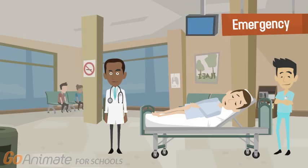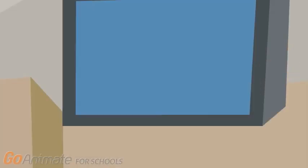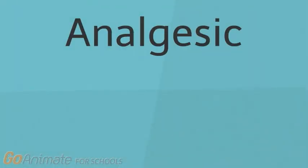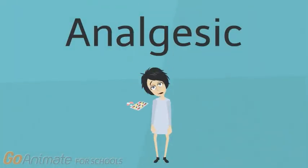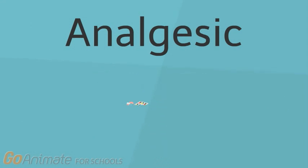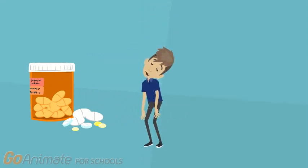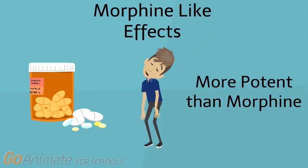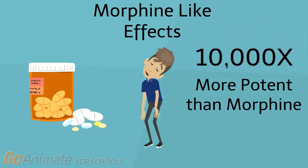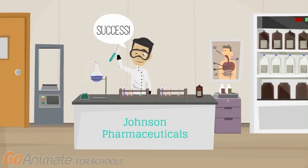Carfentanil is classified as an analgesic, otherwise known as a painkiller. It is a synthetic opioid that is very potent. Opioids in general have morphine-like effects on the body; however, in the case of carfentanil, it has a 10,000 times stronger potency than morphine, making it very lethal.